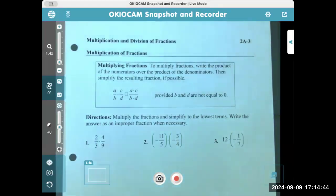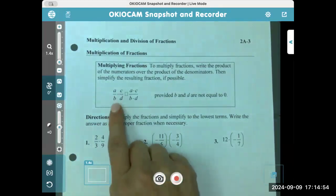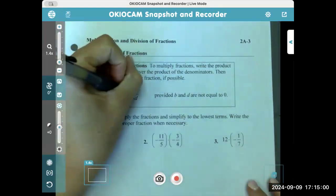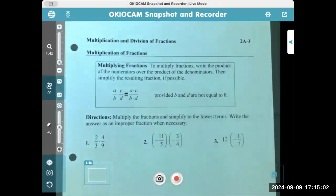Let's start with multiplying fractions. To multiply fractions, write the product of the numerators over the product of the denominators, then simplify the resulting fraction if possible. So a over b times c over d equals a times c over b times d. Again, provided that b and d are not zero. Directions: multiply the fractions and simplify to the lowest terms. Write the answer as an improper fraction when necessary.